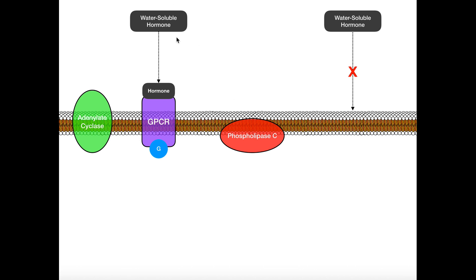We're going to begin with water-soluble hormones. What does it mean to be water-soluble? It means the molecule is hydrophilic, which generally means it's polar or charged. Polar and charged molecules are soluble in water, and since the blood is mostly water, they're soluble in the blood. However, the plasma membrane is mostly lipid. So a water-soluble substance is not going to be able to cross through this membrane — you have to have some other mechanism to get this signal across.